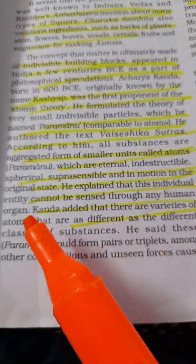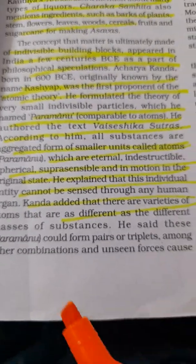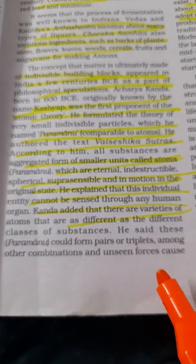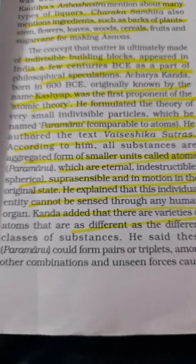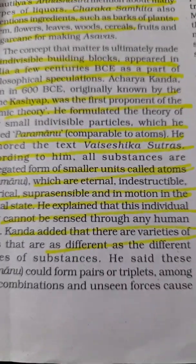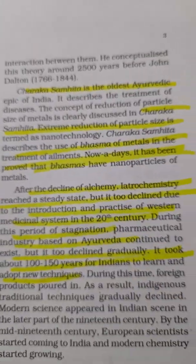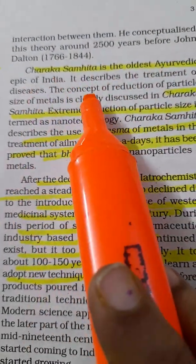Kanada explained that the individual entity Paramanu cannot be sensed through any human organ — you cannot see it or smell it. He added that there are varieties of atoms belonging to different classes of substances, and that these Paramanu could form pairs or triplets, with unseen forces causing interactions among them. He conceptualized this atomic theory around 2500 years before John Dalton, who lived from 1766 to 1844.